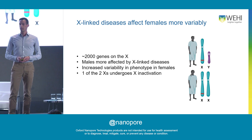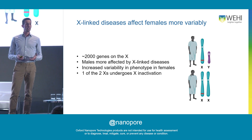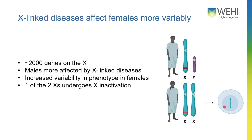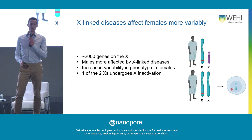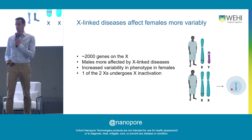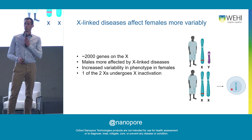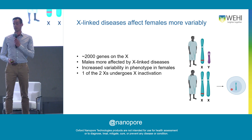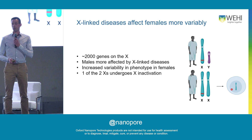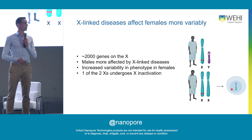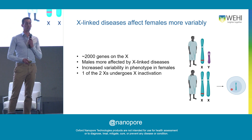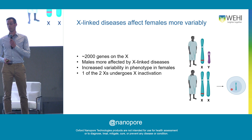To understand this, you've got to remember that in any one cell there's only one X active at a time. Through a process called X chromosome inactivation, one of the two Xs gets condensed into this little red dot called the Barr body, with very different epigenetics — a different 3D structure, different histones, different histone marks, and crucially different DNA methylation.